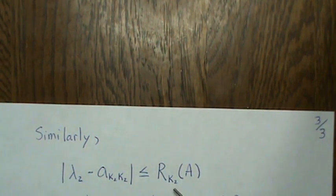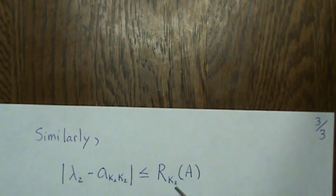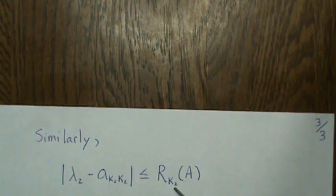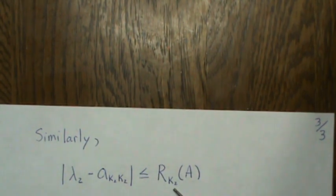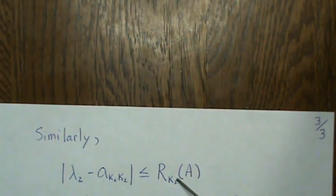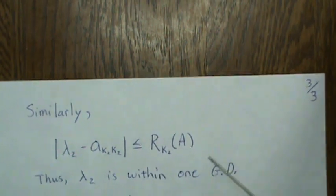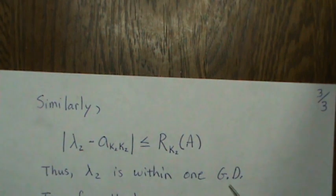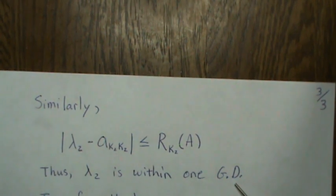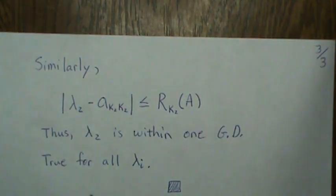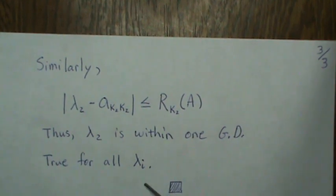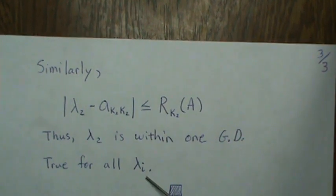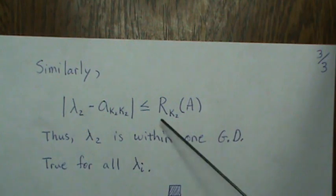And then we can do similarly—we can do this for the second eigenvalue. We can form this relationship that for some k2, remember this is wherever the largest element is in the second eigenvector, this relationship holds. So this says that lambda 2 is in one of those Gershgorin disks.